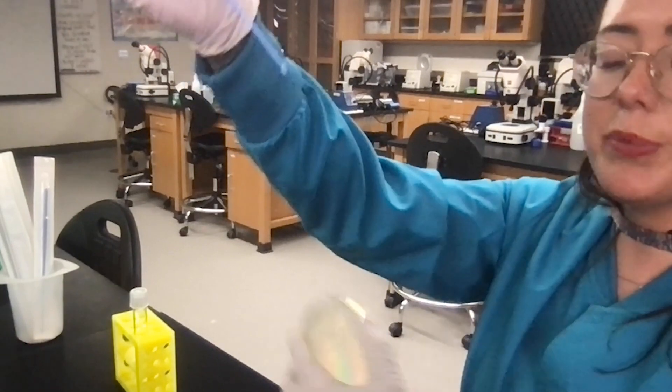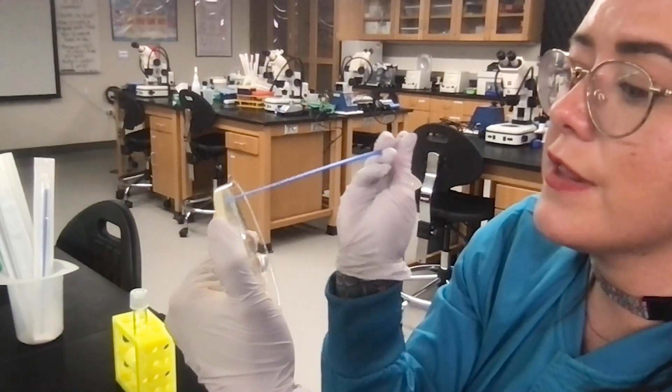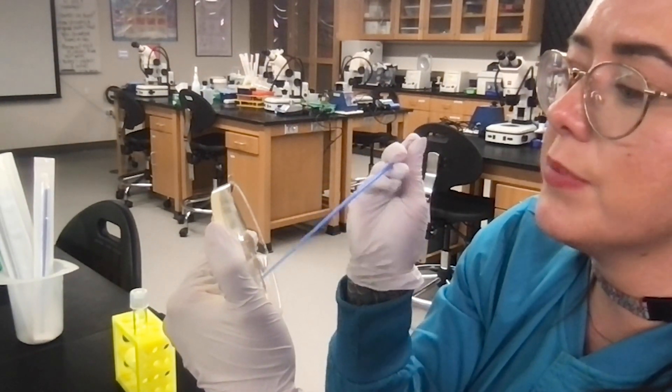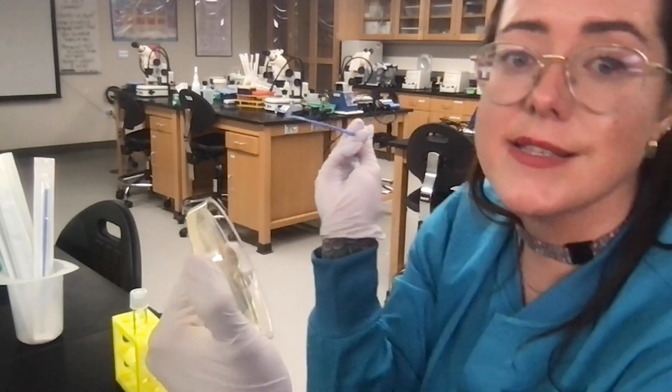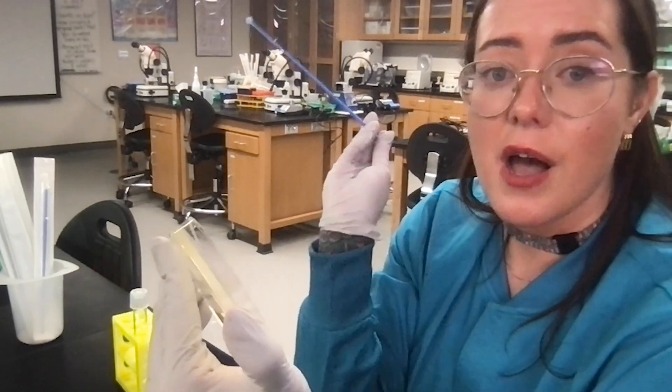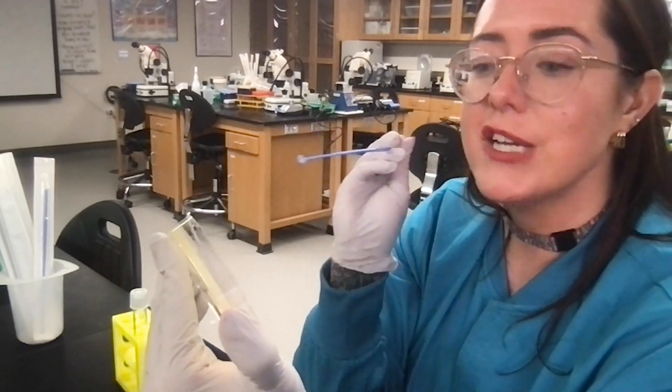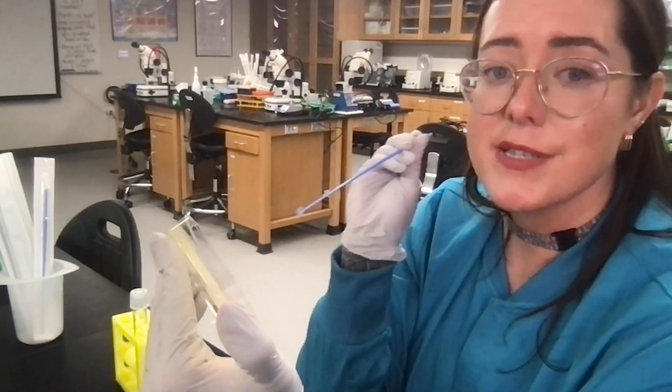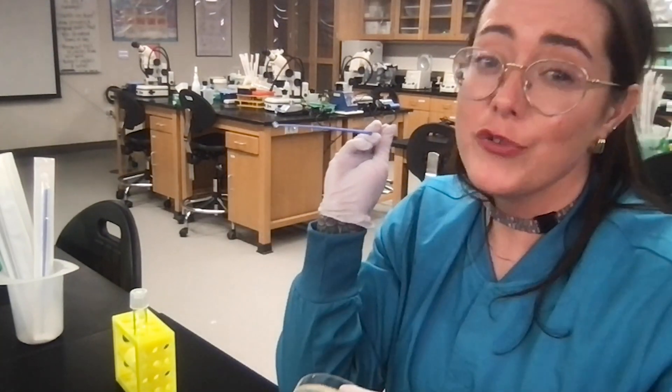And now I can take a new agar plate and I can just streak that directly onto the plate and practice the same streaking method. So toss this. I can get a new inoculation loop such that eventually towards the center of this plate, I now will have, hopefully, single colonies.